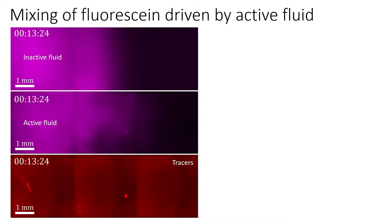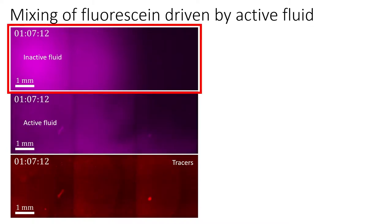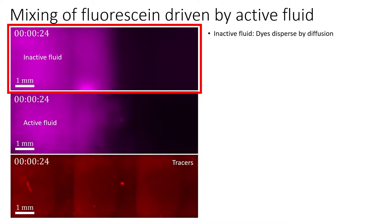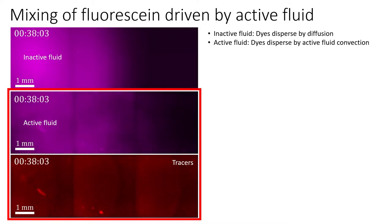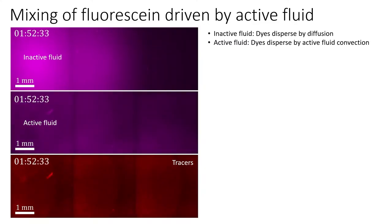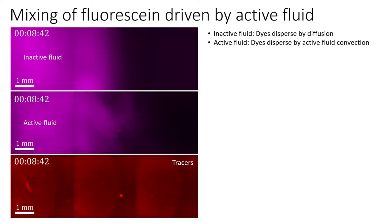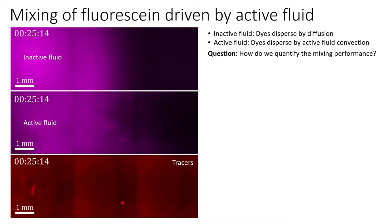We design the mixing experiments by activating fluorescence in the left half of the sample, then observe how the fluorescence disperses to the rest of the sample. As a control, we have an inactive fluid — the active fluid system without ATP, so motors are not fueled and no flows are generated. In the inactive fluid system, dyes disperse purely by diffusion. In the active fluid system, we see that dyes are actively driven by flows and dispersed to the rest of the sample in about an hour, driven mainly by active fluid convection. It is obvious that active fluid can promote mixing, but the real question is: by how much?